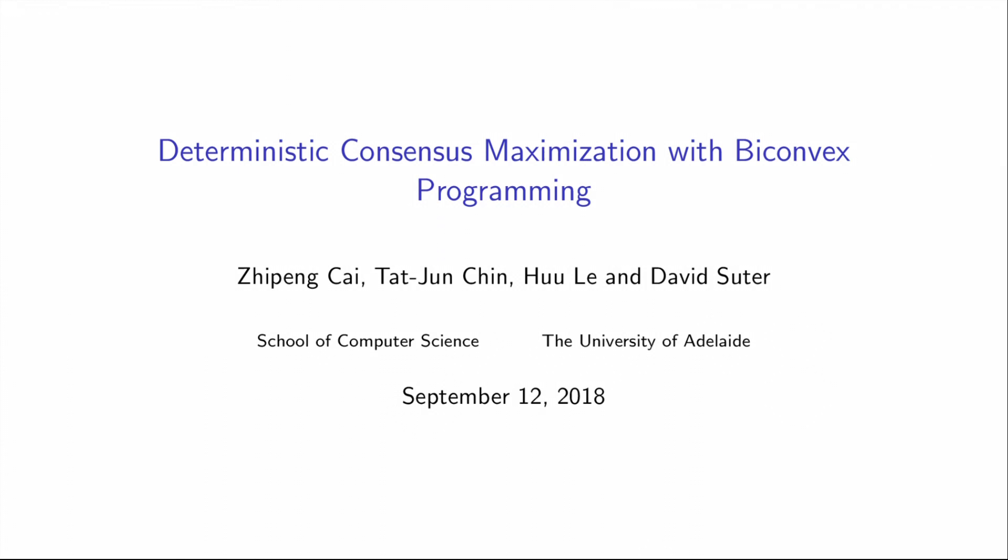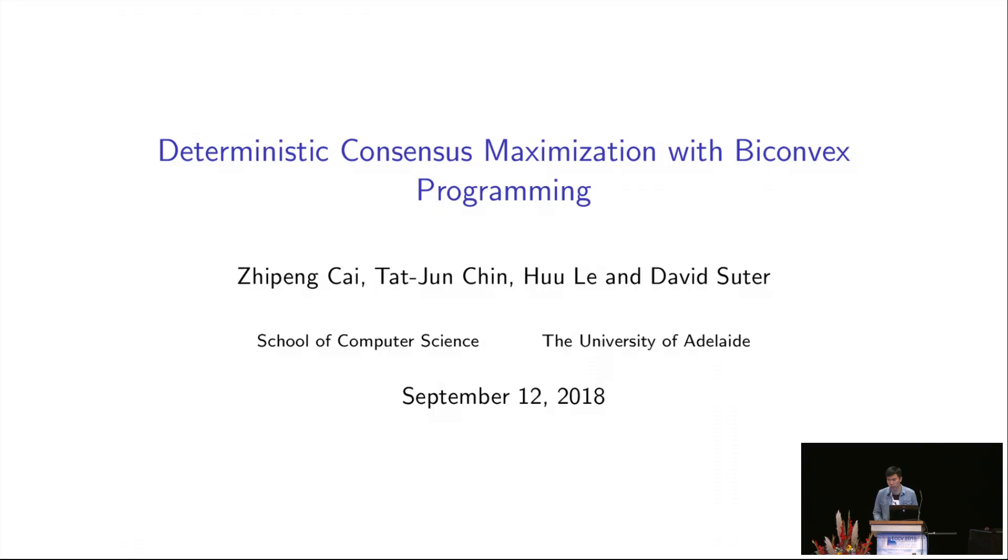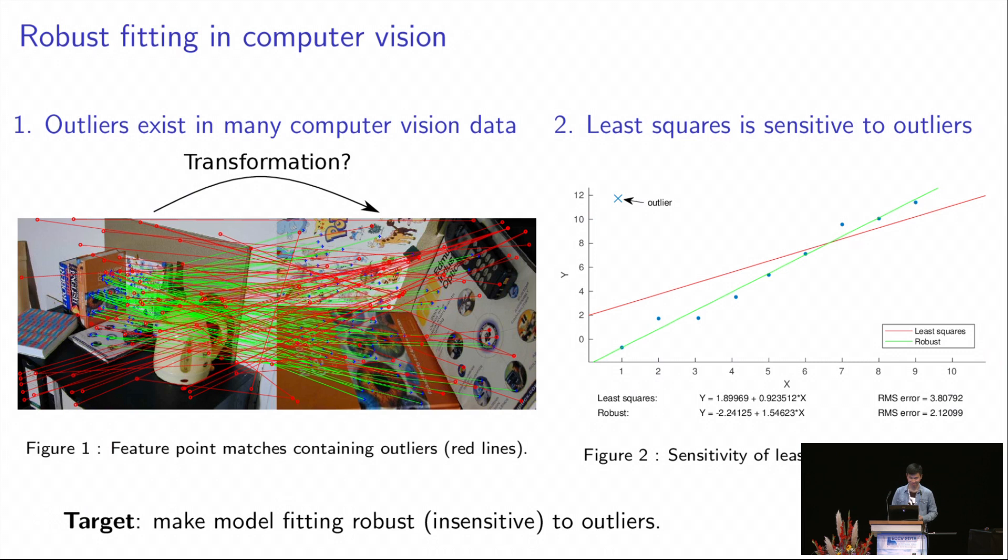Hello, let's begin session 3C Optimization. The first talk will be Deterministic Consensus Maximization with Biconvex Programming by Zhipeng Tsai, Tatjoon Chin, Hu Li, and David Suter. And Zhipeng will give the talk. Hi everyone, I'm Zhipeng from the University of Adelaide. In this talk, I would like to share our new algorithm for efficient robust fitting.